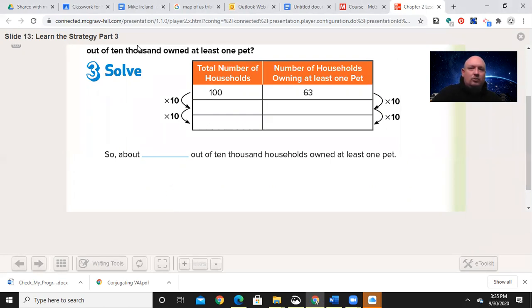To extend it up from 100 to 10,000, I'm going to start by multiplying 100 by 10, which gives me 1,000.